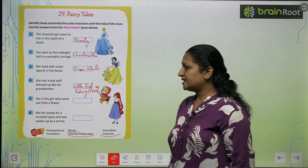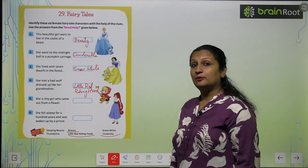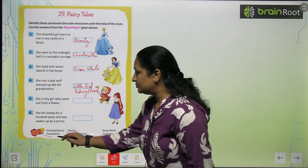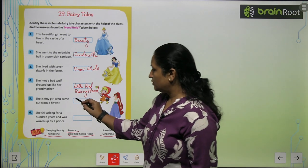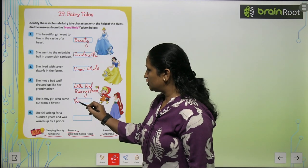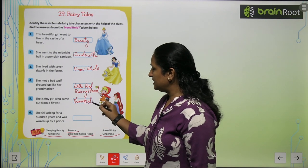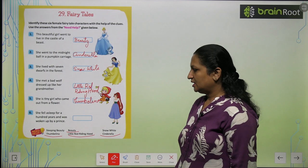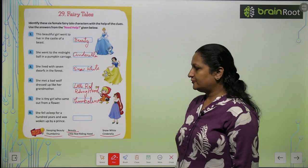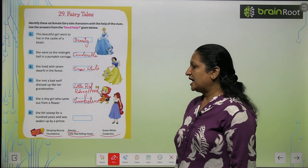She is a tiny girl who came out from a flower. Who was she? She was Thumbelina. So you write it here: T-H-U-M-B, Thumb, E-L-I-N-A, Thumbelina.